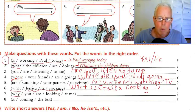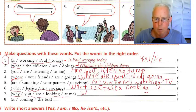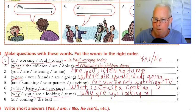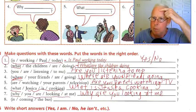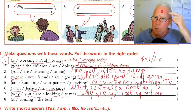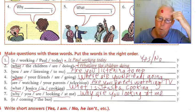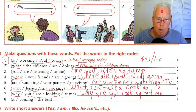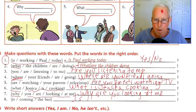Number seven: 'Why you are looking at me' — again that part is like a statement. So WH word first: Why are you looking at me? Number eight: 'Is coming the bus' — that has to be: Is the bus coming? Is the bus coming? Yes, it is — or No, it isn't — or No, it's not.